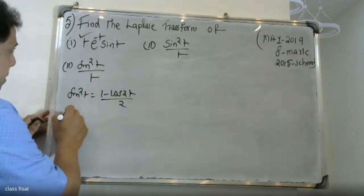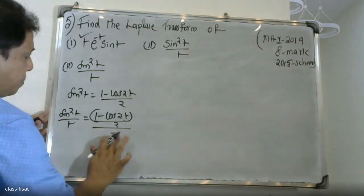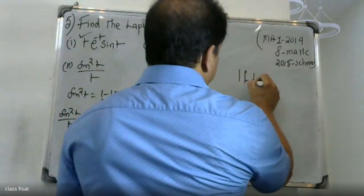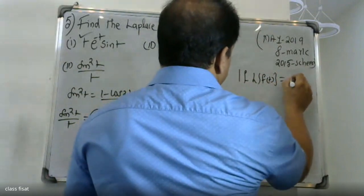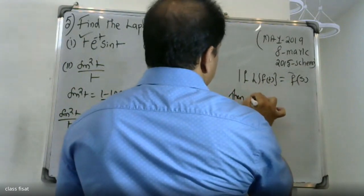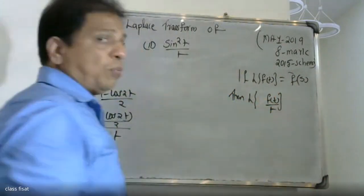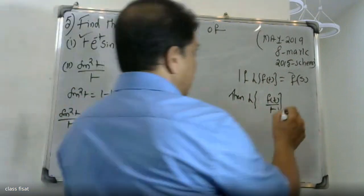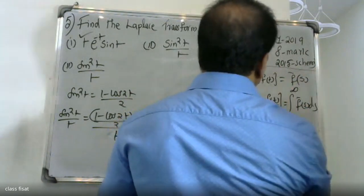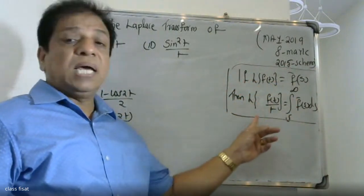sin²t divided by t: 1 minus cos 2t by 2, divided by t. Division by t: 1 minus cos 2t. If Laplace transform of f of t equals F(s), then Laplace transform of f(t) divided by t — the formula: Laplace transform of f(t) by t.